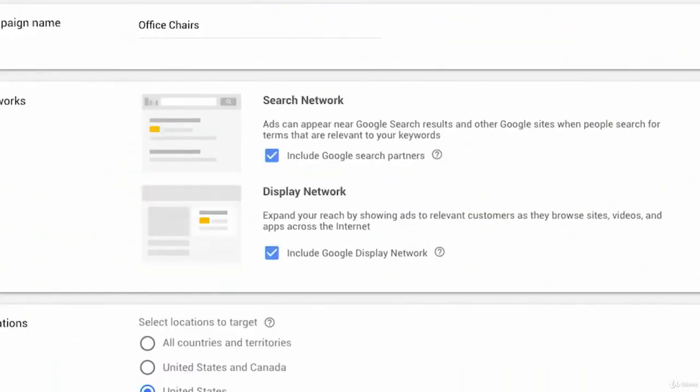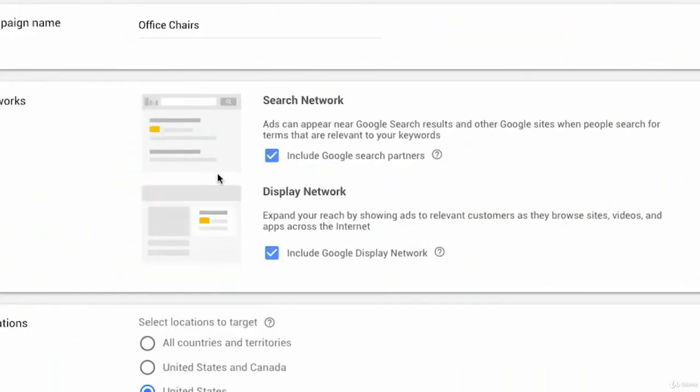The next option we have is to choose networks, search network or display network. And by default, and again, this is one of the things that Google does by default to get you to spend more money. The first thing you want to do is deselect display network.